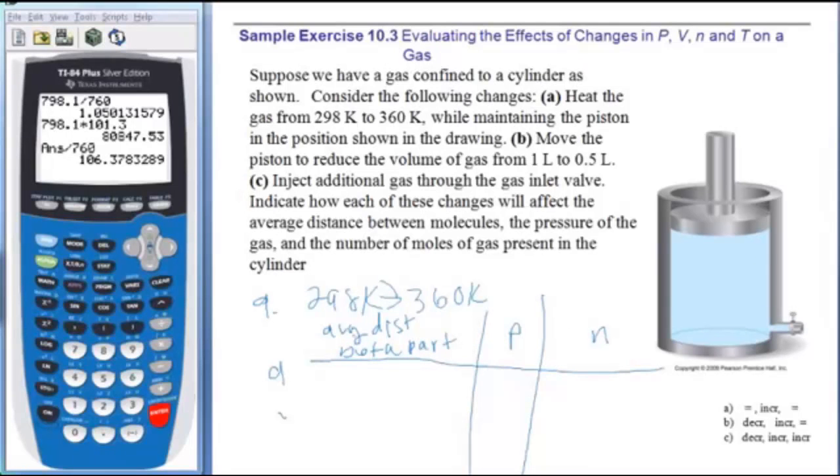And for part A, where I am increasing the temperature, I'm assuming the piston needs to stay, so volume is constant. And if volume is constant, the average distance between particles, assuming I have the same number of particles, is going to be equal. I haven't added any more particles to the mix, so I have an equal number of particles. But what does go up is pressure because I had particles hitting the walls at a certain rate. But if I have those same particles now moving much faster, they're going to hit the side of the wall much more often.